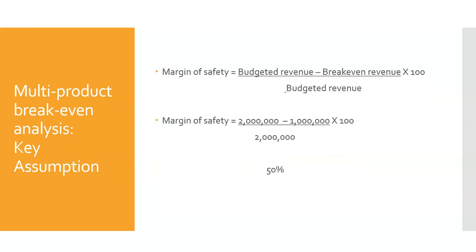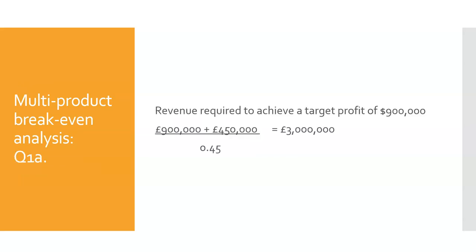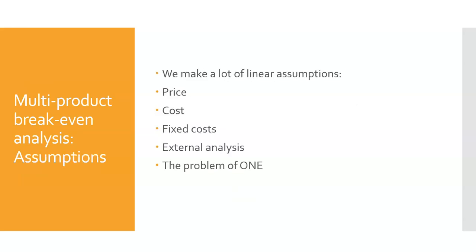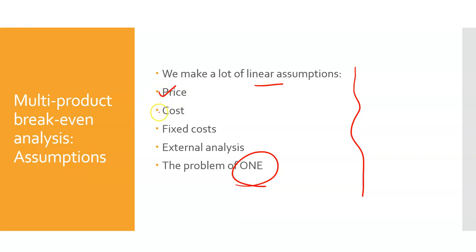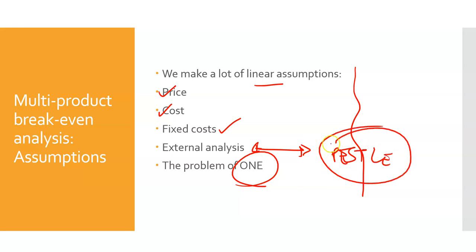We have discussed margin of safety and target profit in previous classes. The problem with breakeven analysis, fundamentally, is these assumptions — what I always refer to as the problem of one: you have one price, one cost, fixed costs aren't changing, the external situation is very much stable. It doesn't take into account any shocks — basically, it's as if you carried out a PEST analysis and everything's in a wonderfully stable environment. But we know that's not quite true — you're constantly reacting to the forces in your industry and the external environment.